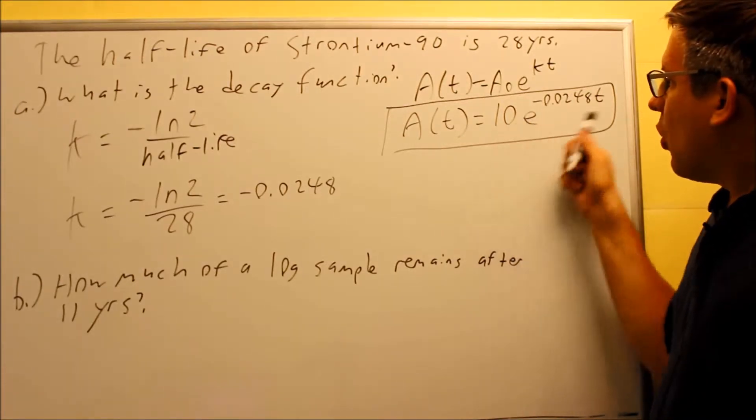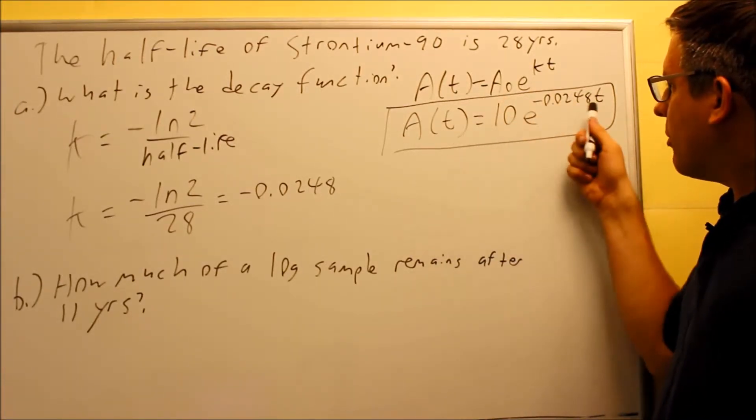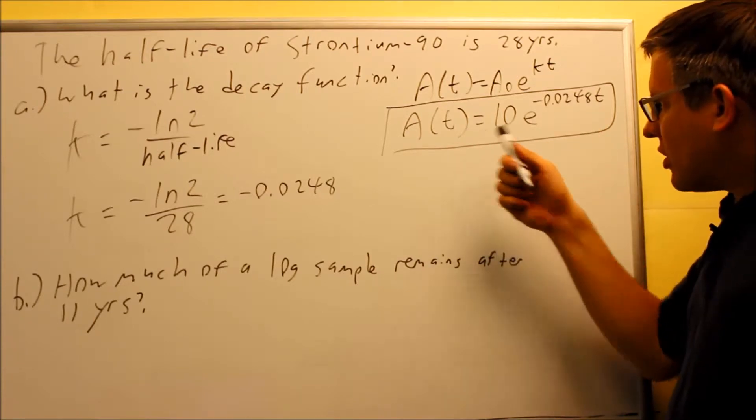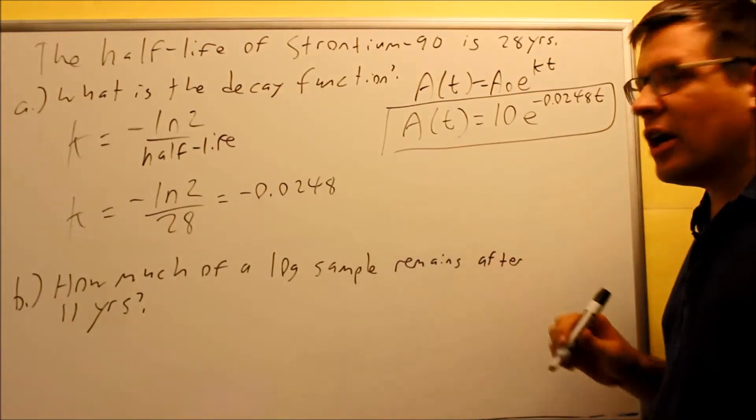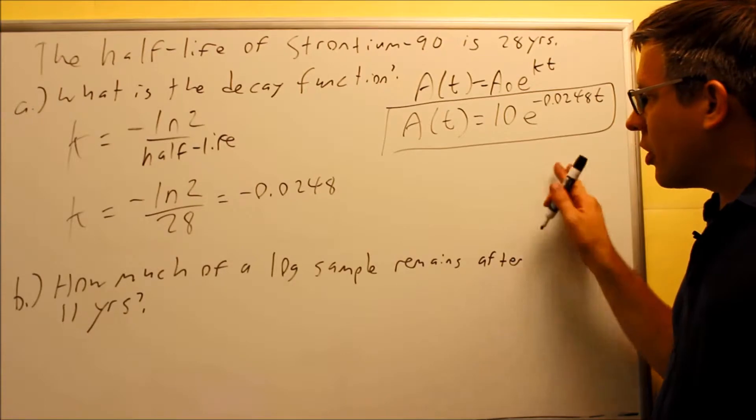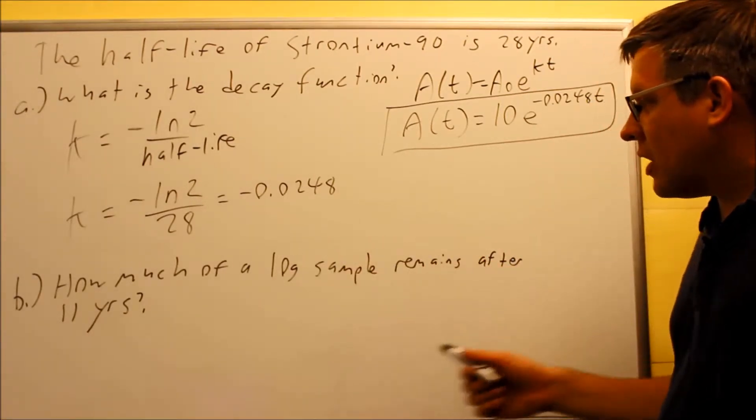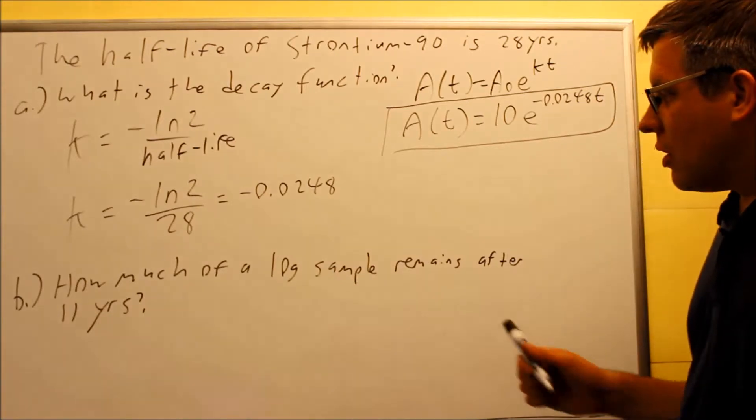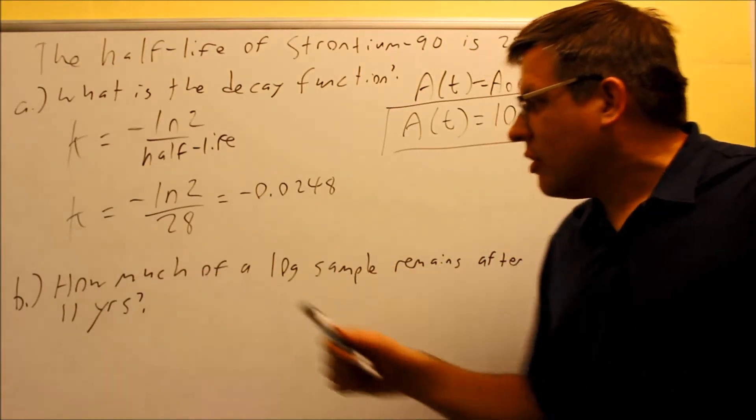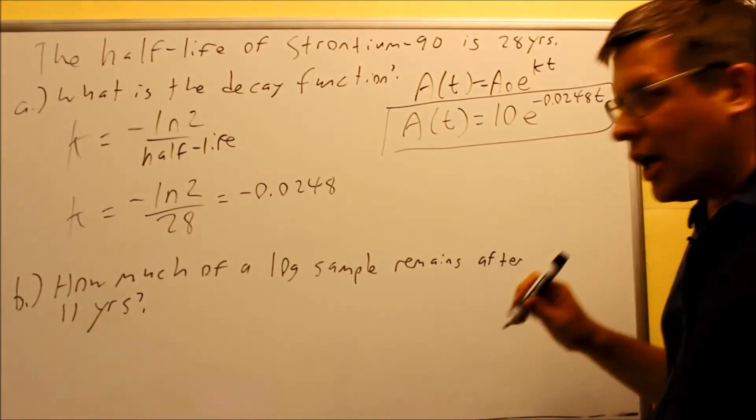That would be specific to this problem. If you're starting with 10 grams, we have something now where if you put in any amount of time, that'll give us an estimate for how much is left at that certain time. So we're going to use that to answer part b, how much of a 10-gram sample remains after 11 years. This means you're going to put 11 years into the time.